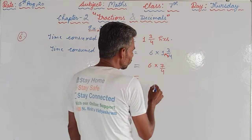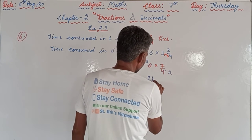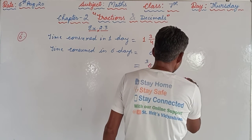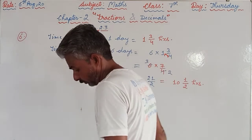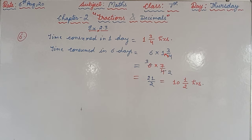Four and six are both in the table of two, so we can reduce: two twos are four, two threes are six. That gives seven times three over two, which is twenty-one by two. The answer will be ten and one-half. Since this is a word problem, the answer in language is: ten and one-half hours were required by Lipica to complete the book.